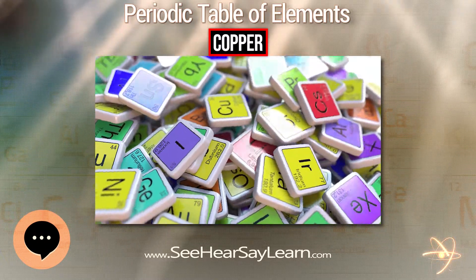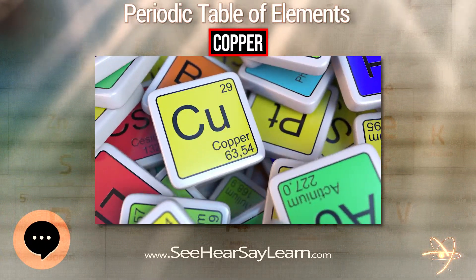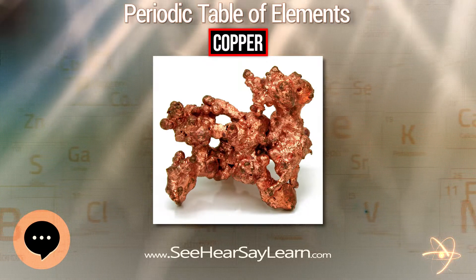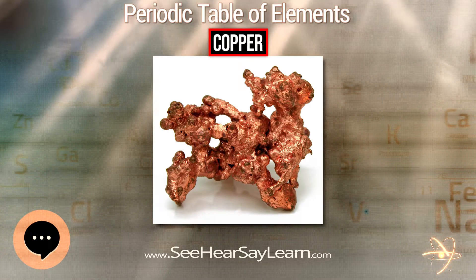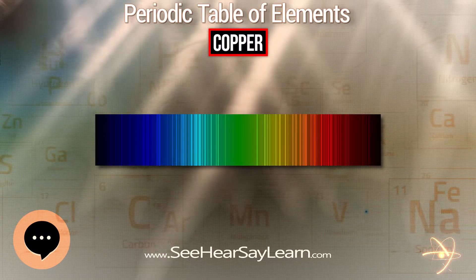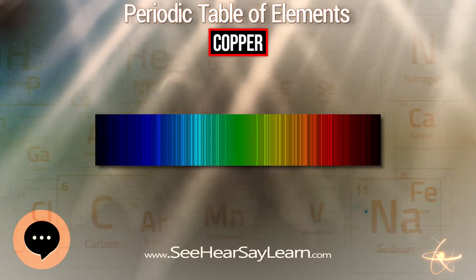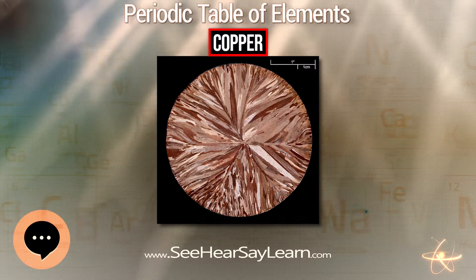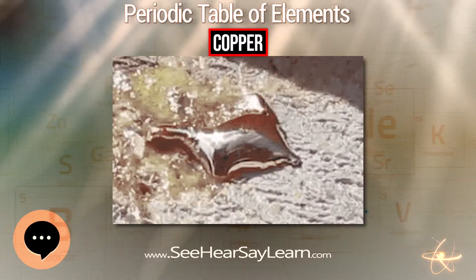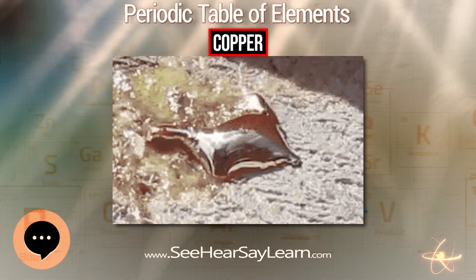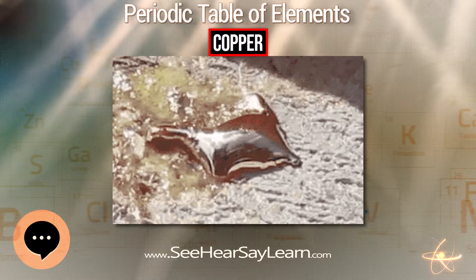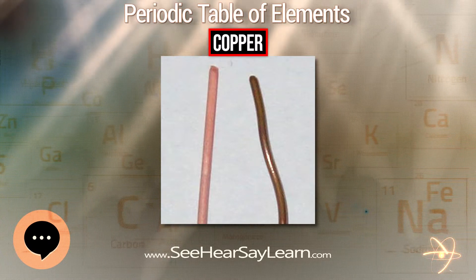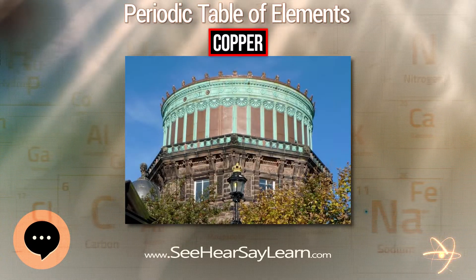There are 29 isotopes of copper. ⁶³Cu and ⁶⁵Cu are stable, with ⁶³Cu comprising approximately 69 percent of naturally occurring copper; both have a spin of 3/2. The other isotopes are radioactive, with the most stable being ⁶⁷Cu with a half-life of 61.83 hours. Seven metastable isotopes have been characterized; ⁶⁸ᵐCu is the longest-lived with a half-life of 3.8 minutes.